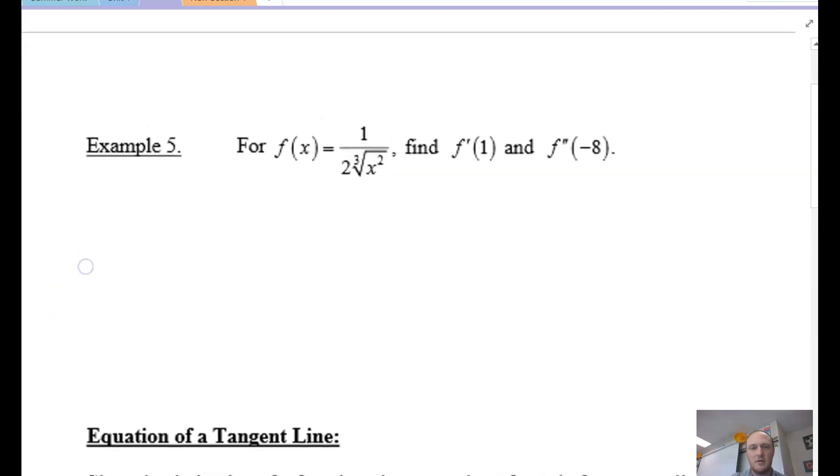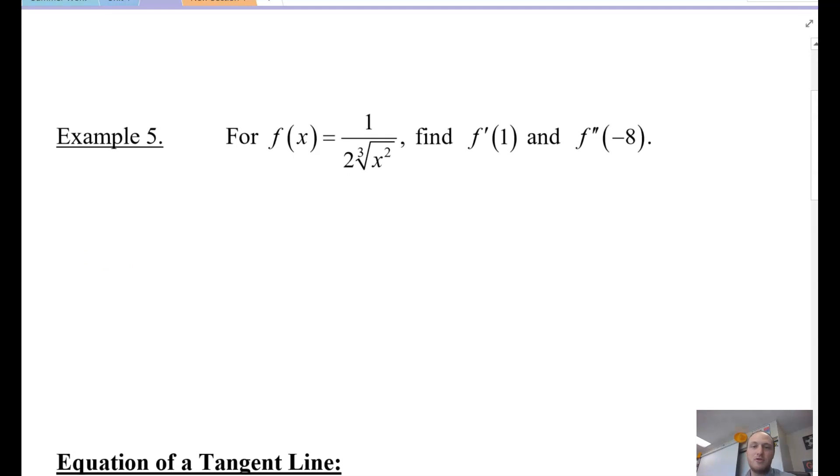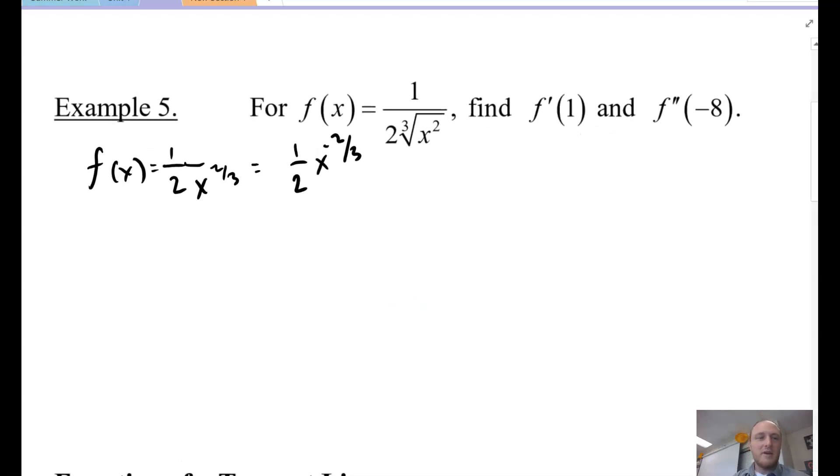So here is example five. And they want a couple of things. They say if you have this function f(x), they want you to find f'(1) and then f''(-8). So the first thing that we have to do in order to find these and evaluate them is evaluate f'. So what I'm going to do first, I'm going to rewrite f(x). And I'm going to write this as 1/2, right? And this is x to the power of 2/3. So again, let me rewrite this. Oh, no. Drumline. Can you hear the drums? x to the power of negative 2/3. Did you guys know I was in drumline in high school? True story. I was. Bass drum and xylophone. Rock it.